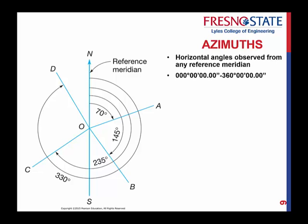Azimuths can be from zero degrees all the way up to 360 decimal seconds. And these are all clockwise angles — that's important. Always remember that azimuths are clockwise angles, meaning you start at your reference line and then measure clockwise from that reference line to any given point of interest.